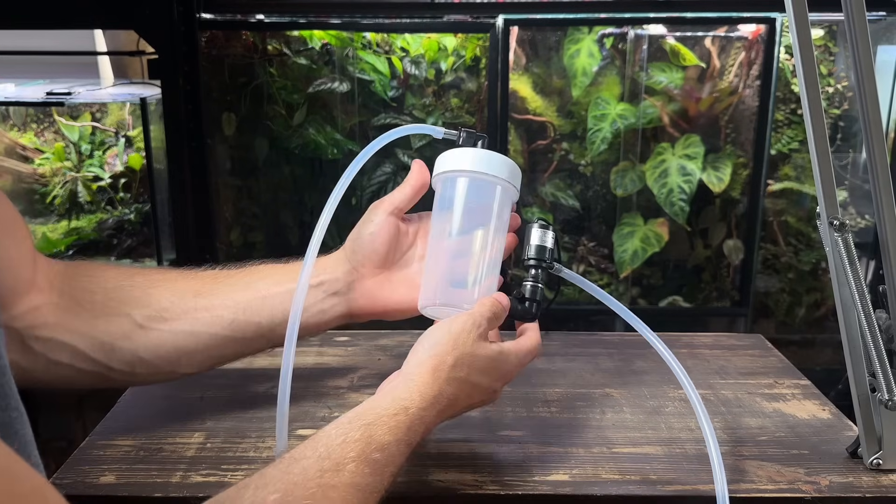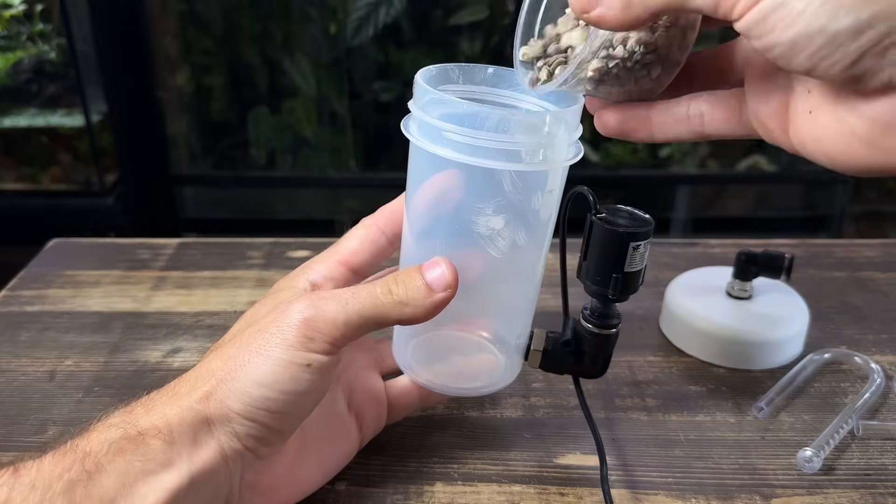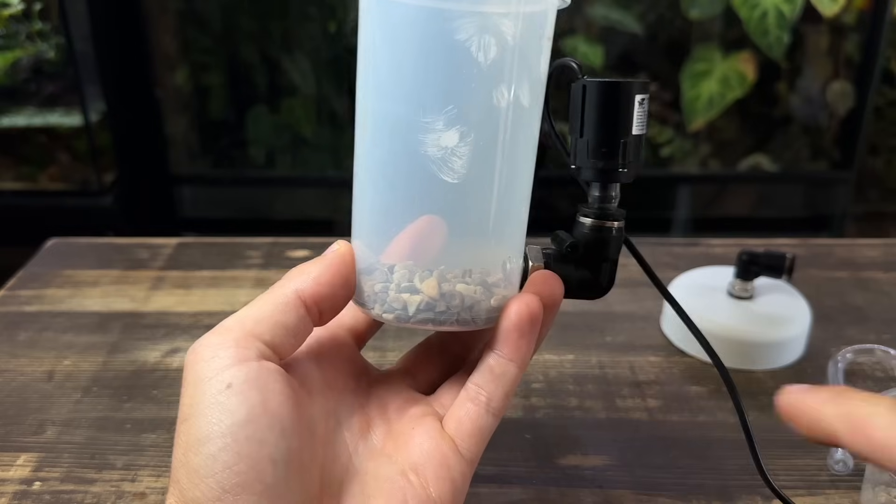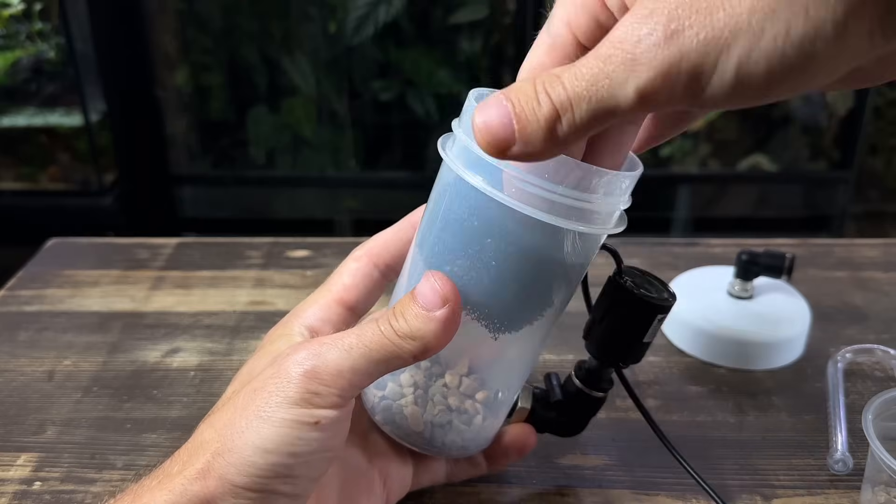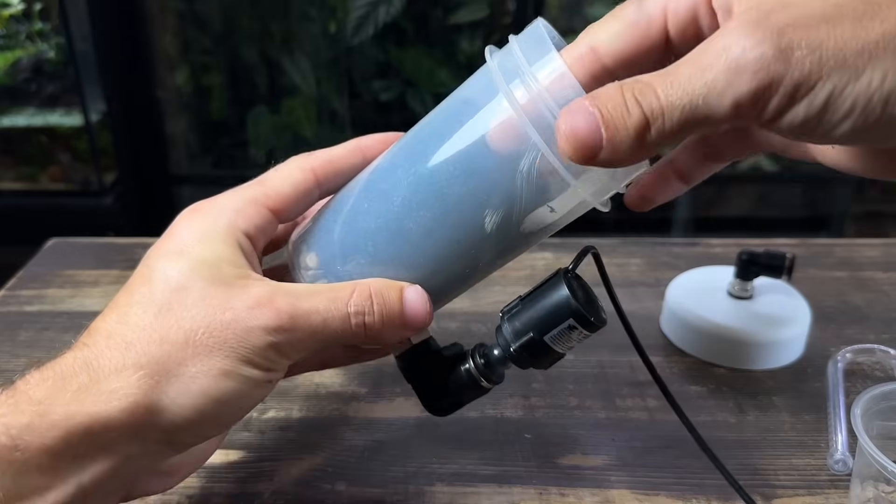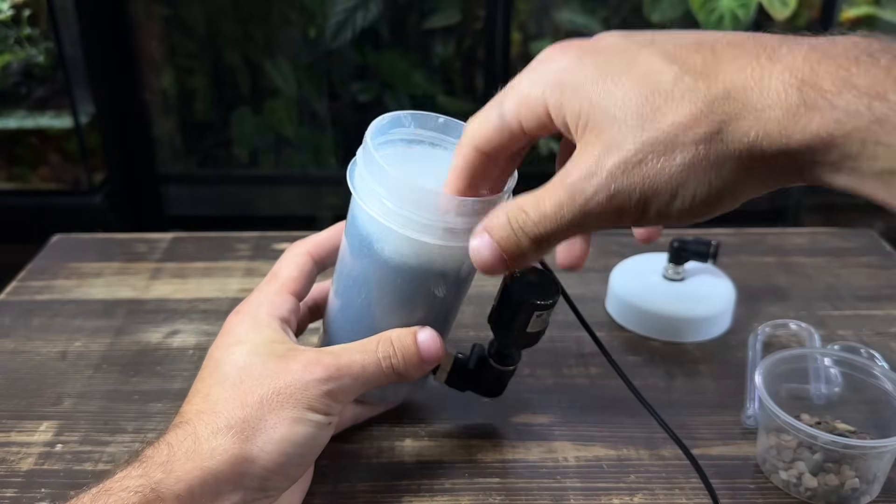That's the main part of the filter pretty much complete but it's definitely going to work better with some media inside. I'll start with some gravel to give it some weight and stop it toppling over too easily. Just make sure it doesn't go any higher or block up the hole leading to the filter. Some coarse filter foam and fine filter floss will help the filter be as efficient as possible.